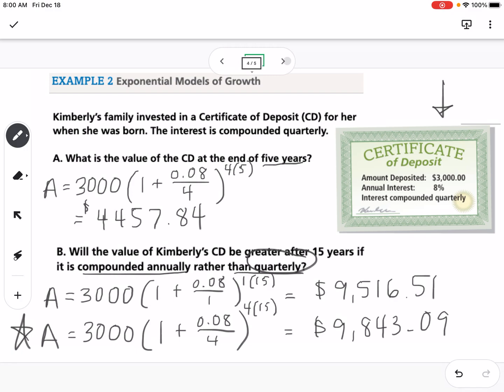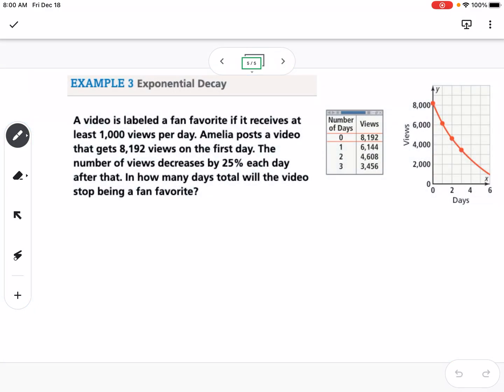Our last example is exponential decay. A video is labeled a fan favorite if it receives at least 1,000 views per day. Amelia posts a video that gets 8,192 views on the first day. The number of views decreases by 25% each day after that. In how many days total will the video stop being a fan favorite?